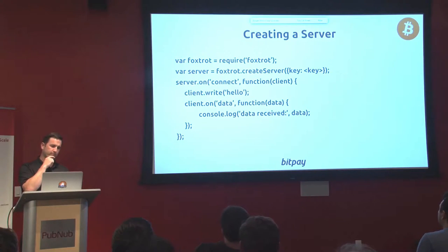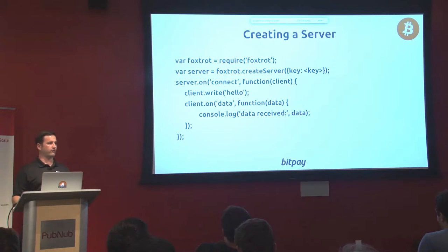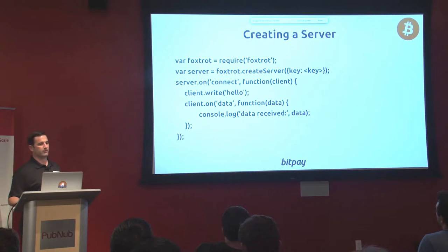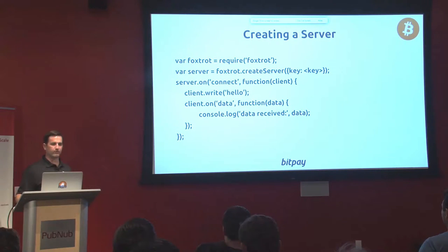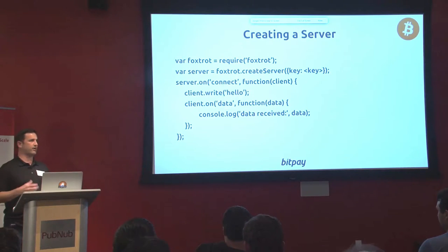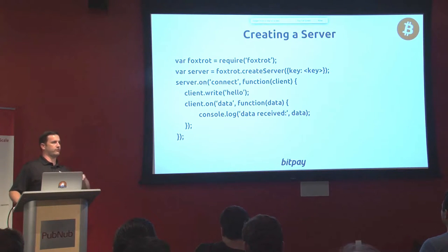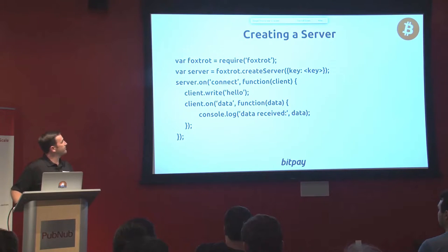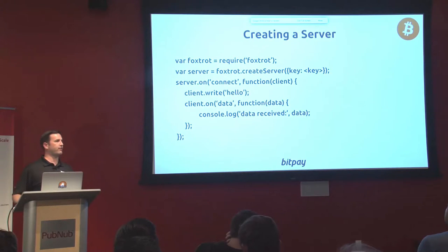Here's a little code example. If you want to create a server, you require the Foxtrot Node module and then call the createServer method — the same thing the Net module in Node.js uses. You put a handler in there for the connect event, and when you get a connection, you can start writing to the client. That's all the code required to create a server with Foxtrot. Where it says key, you would be putting in a private key — you're creating a server with a private key, and there's a public key that goes along with that. When you start up Foxtrot, it automatically — very similar to Bitcoin — goes out and tries to find peers to connect to. I'll talk more about peer discovery in a minute.